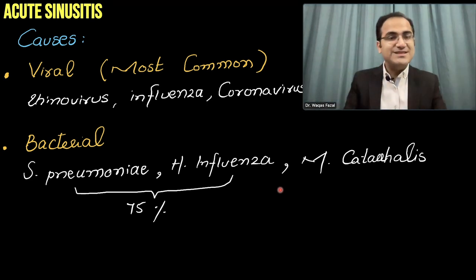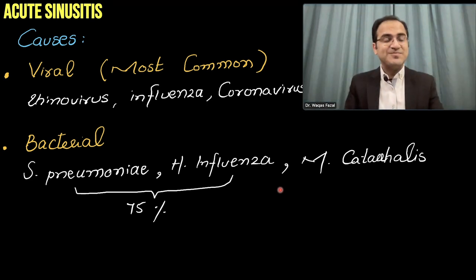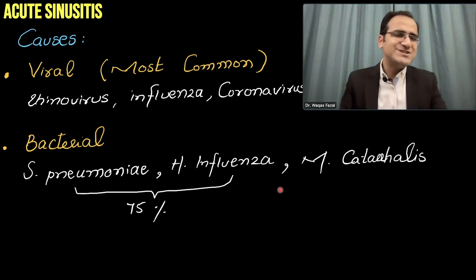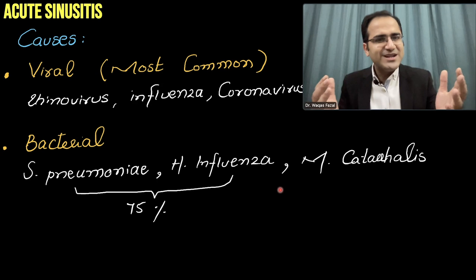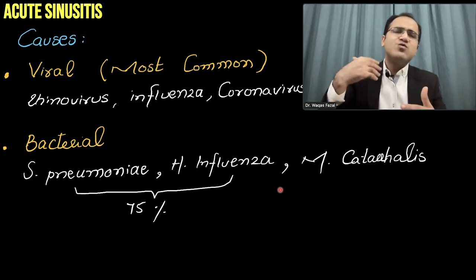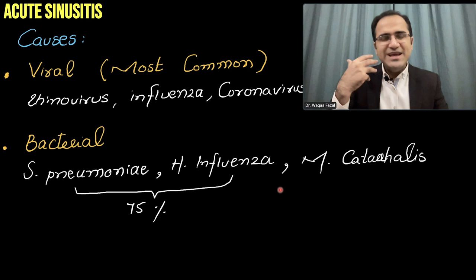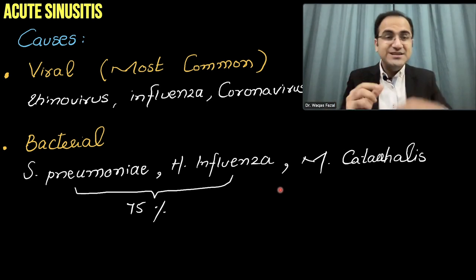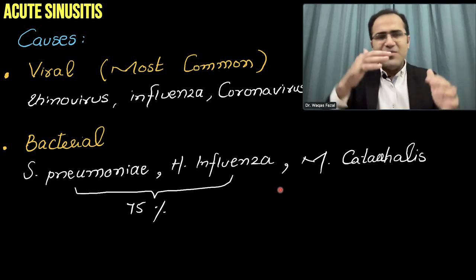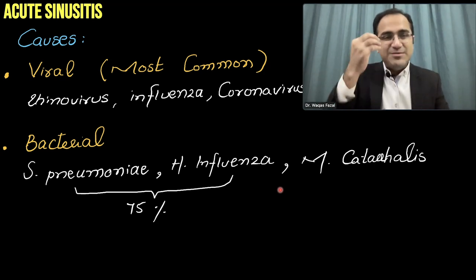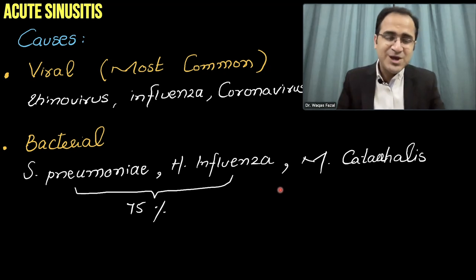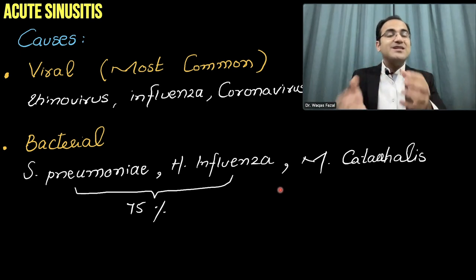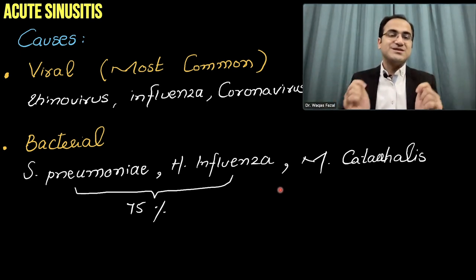Usually most cases start as viral sinusitis with a superimposed bacterial infection. The classical scenario is a patient who got the flu last week, was improving, but then suddenly worsened — pain increased, discharge became purulent, green-colored, foul-smelling. This represents bacterial superinfection following the initial viral sinusitis.